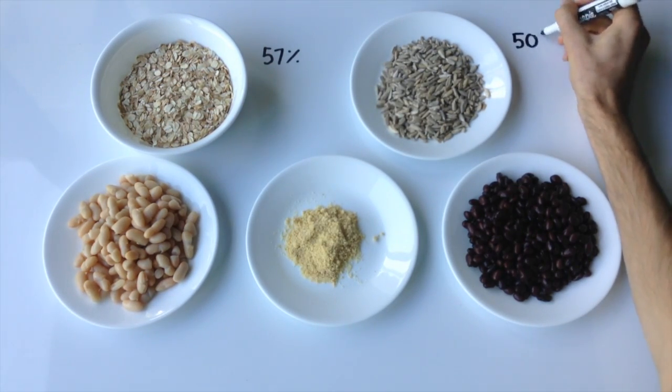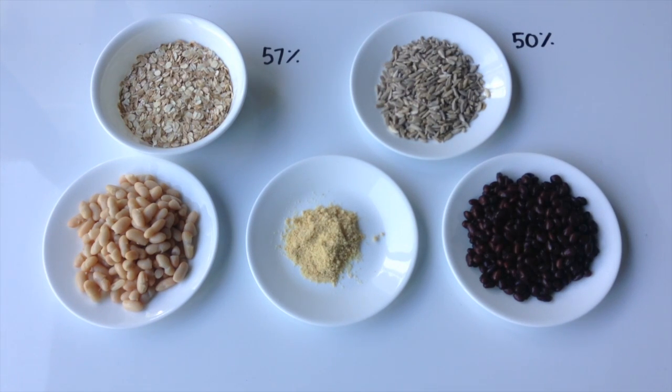A quarter cup of sunflower seeds has 50%. One cup of navy beans has 44%. Two tablespoons of nutritional yeast has 30%, while one cup of black beans has 28%.